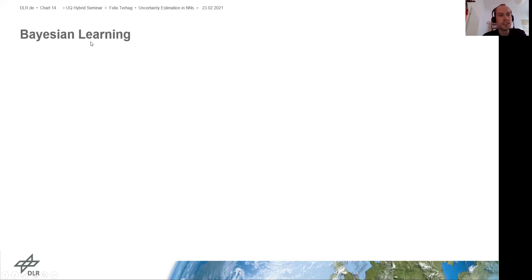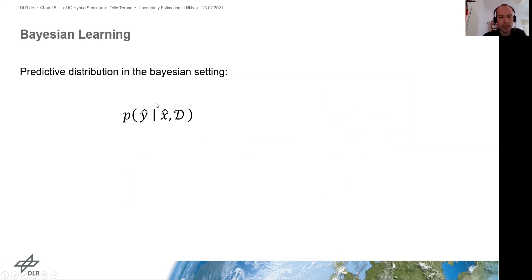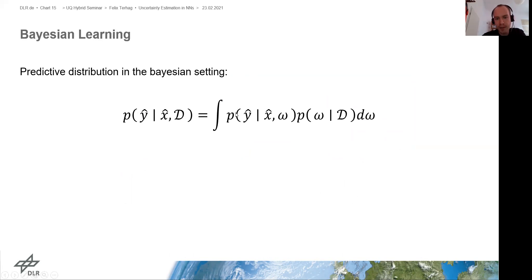Now we want to use dropout for uncertainty estimation, so I will first introduce the framework of Bayesian learning. Normally in neural networks every weight and parameter is just a single value, and we want to find the best value for each. In the Bayesian setting, we replace each parameter with a distribution — so for the weights we don't have single values but distributions. To predict in this setting, we also get a probability distribution, defined by the integral over the whole parameter space dΩ.